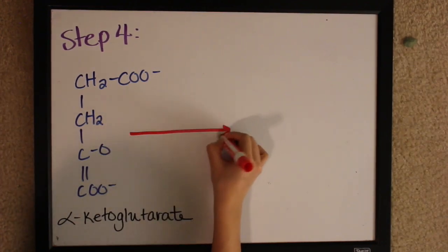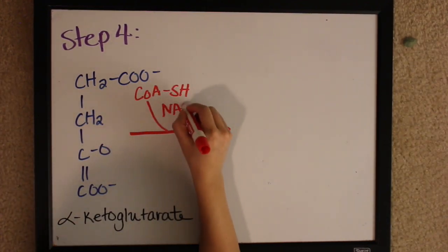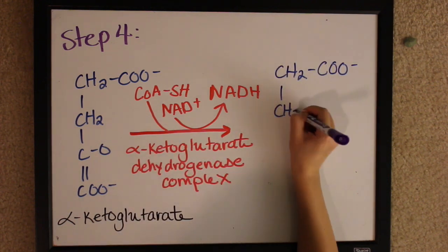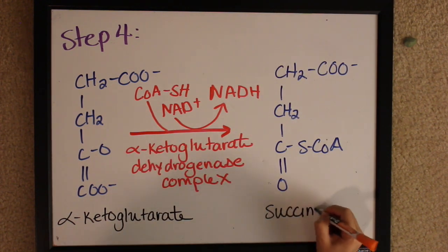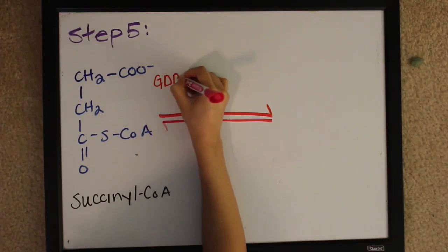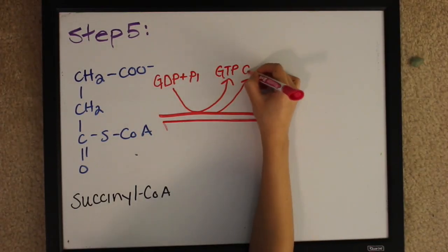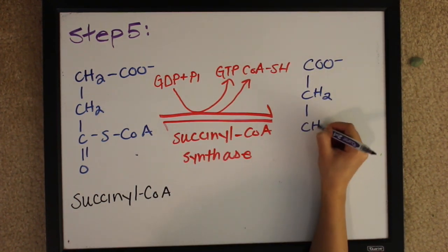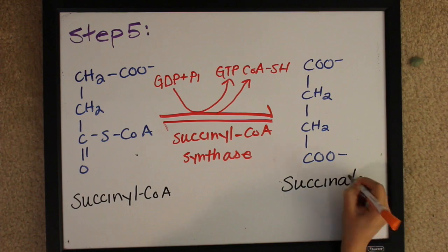Step four continues with alpha-ketoglutarate and the alpha-ketoglutarate dehydrogenase complex to make succinyl-CoA as well as CO2. Step five starts with succinyl-CoA and uses the enzyme succinyl-CoA synthetase to eventually give succinate.